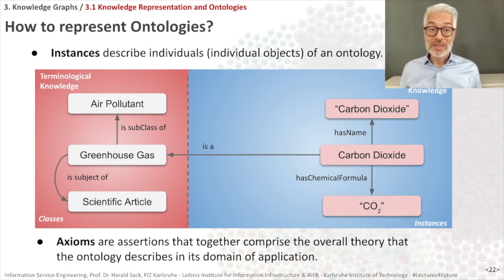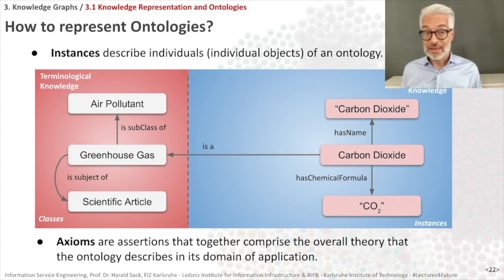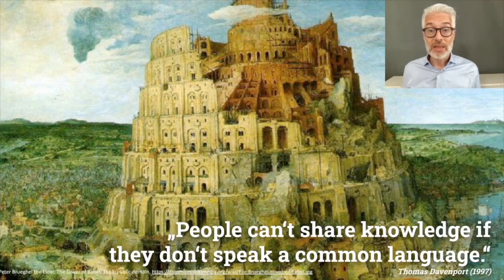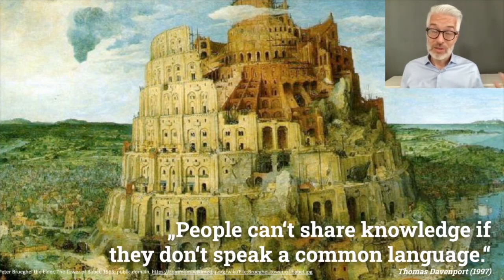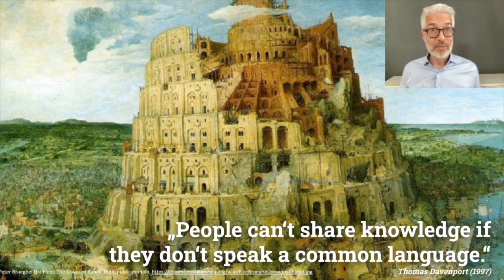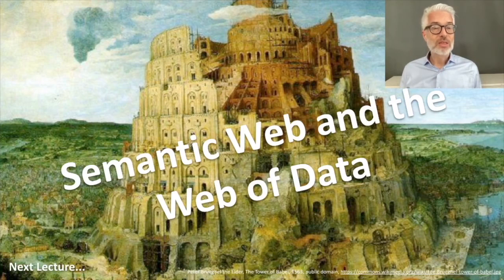We can represent ontologies with a conceptual abstract model. However, how does the computer now understand this? We can't share knowledge if we don't speak a common language, so we need a language for representing exactly these kinds of ontologies — and since it is grounded in mathematical logic, it is understandable for machines. In the next section of the lecture we are going to talk about the efforts of the Semantic Web and the Web of Data towards machine understandability.